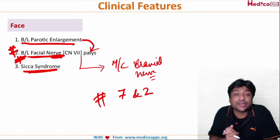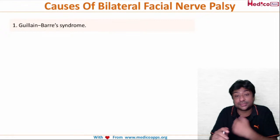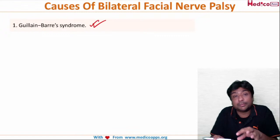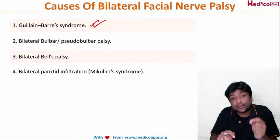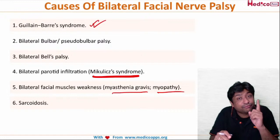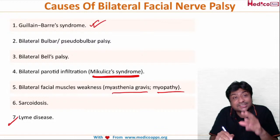Important causes of bilateral facial nerve palsy: Guillain-Barré syndrome (very important), bilateral bulbar or pseudobulbar palsy, bilateral Bell's palsy, bilateral parotid infiltrate (e.g., Mikulicz syndrome), bilateral facial muscle weakness in myasthenia gravis or myopathy, sarcoidosis, and Lyme's disease. These are the seven most important causes.